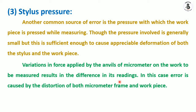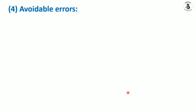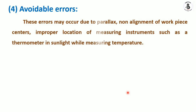Avoidable errors may occur due to parallax, non-alignment of workpiece centers, or improper location of measuring instruments — for example, placing a thermometer in sunlight when measuring temperature. These errors should be avoided by following proper measurement conditions.